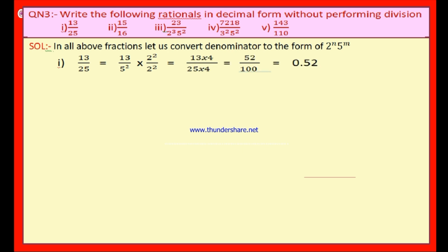Look at the first bit: 13 by 25. The denominator 25 can be written as 5 square. Since the denominator is 5 square, we also need 2 square. Let us multiply both numerator and denominator by 2 square: numerator becomes 13 × 4 = 52, and denominator becomes 25 × 4 = 100. So 52 by 100. Since there are 2 zeros in the denominator, there should be 2 decimal places. Therefore the answer is 0.52.